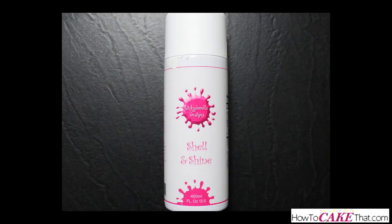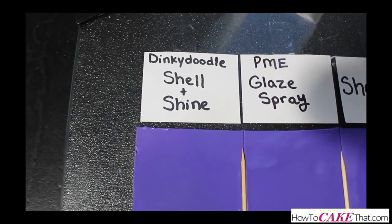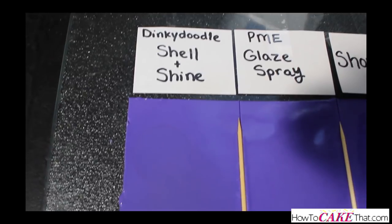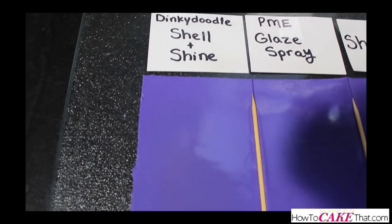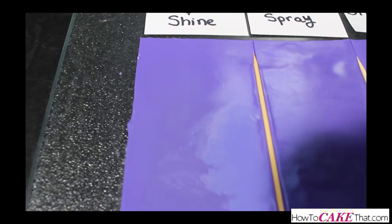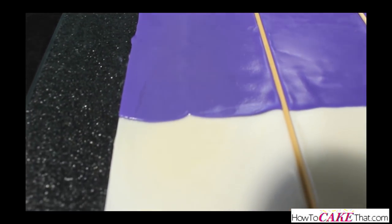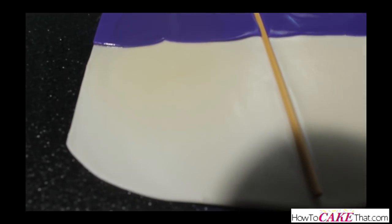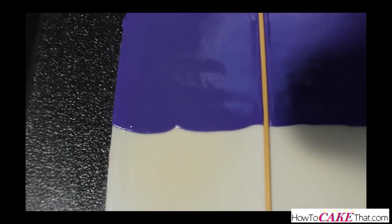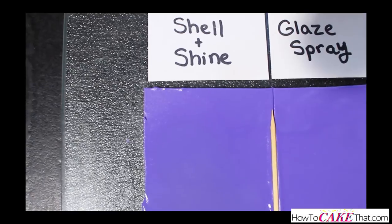Now to let you guys know what I discovered about each product: Dinky Doodle Shell and Shine, oh my goodness I am in love. It was so easy and quick to apply and I got the same glossy result on both the purple fondant and the white. For super fast all-over cake coverage, this is it. According to the instructions, this product can also be applied to chocolate, which means an oily fondant should not affect your results.